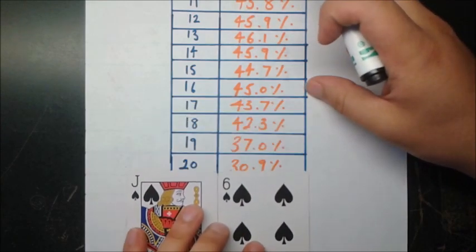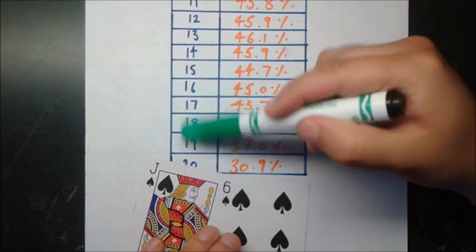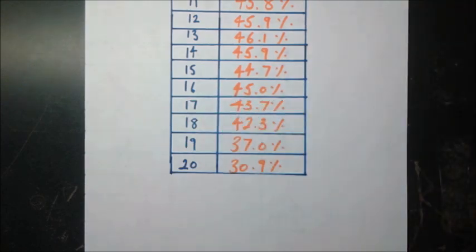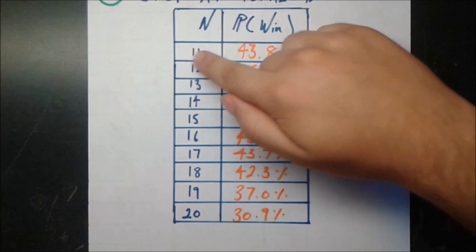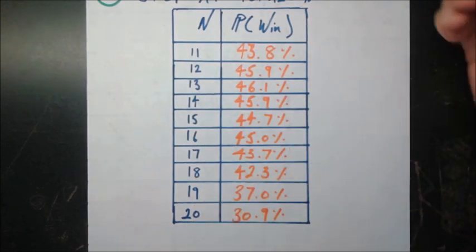But if you have anything from 17 to 20, for example, you would have to take another card until your total is exceeding that number. The computer simulated probabilities tell us the exact chance of winning for each of these different n values. So let's see if you can find some kind of trend here.